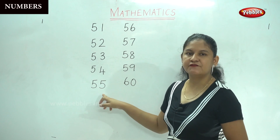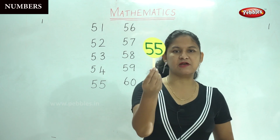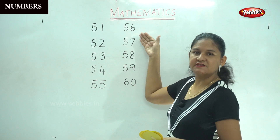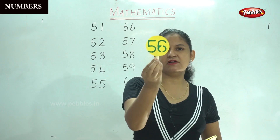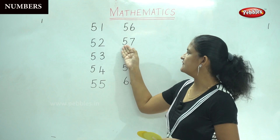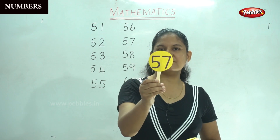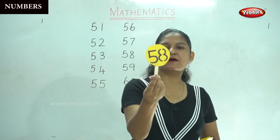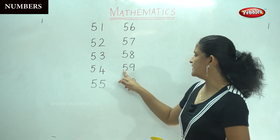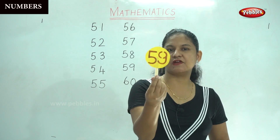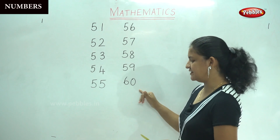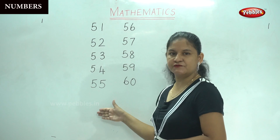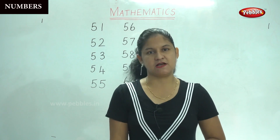The next number is 5 and 5, 55. I have number 55 in my hand — 5 and 5, 55. The next number is 5 and 6, 56. The next is 5 and 7, 57. Then 5 and 8, 58. Then 5 and 9, 59. And the last number is 6 and 0, 60.